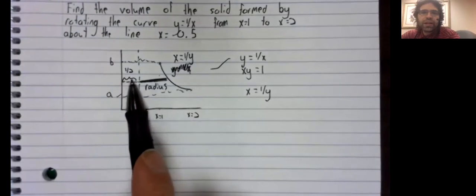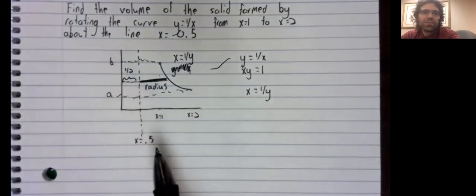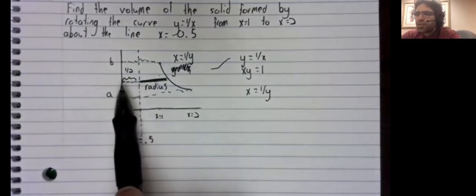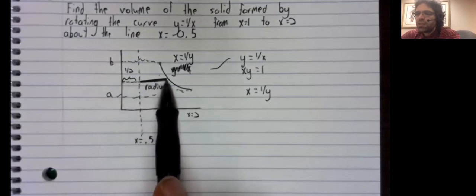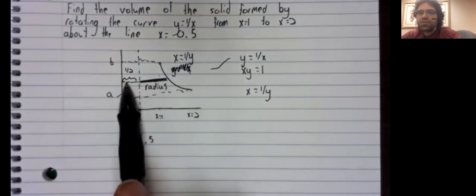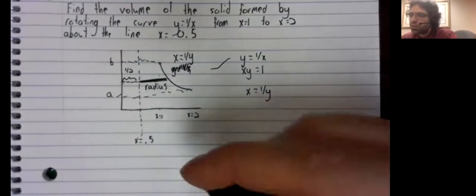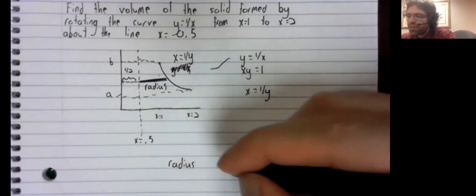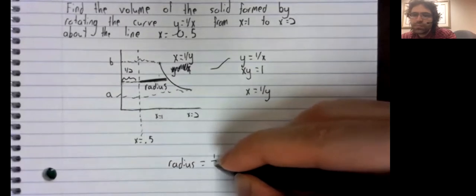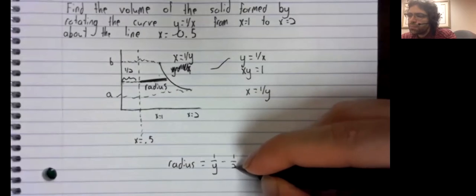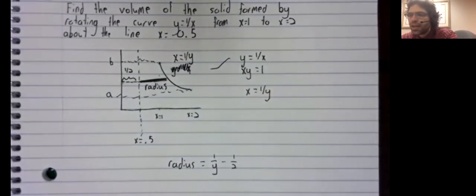And this little line segment has a length of one half. So if this distance is one divided by y, and we don't want this one half to be included, then the radius should be one divided by y minus one half.